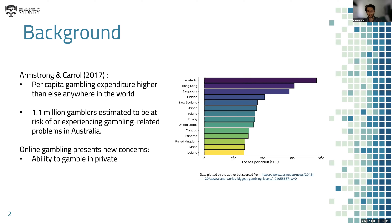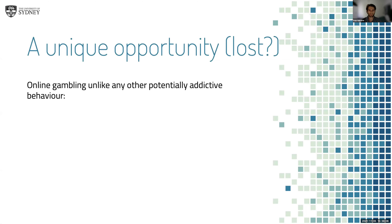Online gambling in particular presents a number of new concerns. People can gamble in private — we no longer have to gamble around our peers, and potentially there are social cues which discourage us from excessively gambling. We can now gamble anywhere at any time thanks to our mobiles, and we can make instantaneous digital payments and are no longer hindered by how much cash we're carrying, like we would be with more traditional in-venue forms of gambling.